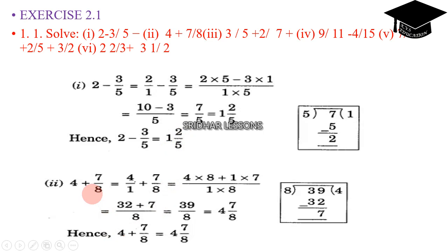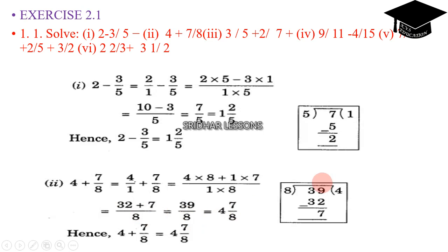Next problem: 4 plus 7 by 8. Since 4 has no denominator, we write it as 4 by 1 plus 7 by 8. The LCM is 8, so 4 into 8 plus 7 into 1 gives 32 plus 7, that is 39 by 8. Dividing 39 by 8: 8 into 4 is 32, remainder is 7. So 4 plus 7 by 8 equals 4 and 7 by 8.